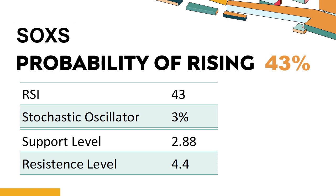The current stochastic oscillator of SOXS is 3%. When the indicator falls below the 20 level, it is usually considered oversold, indicating that a price rebound or recovery is likely for the stock. An oversold condition occurs when the stock price falls too fast and too much in a short period of time, which may indicate that the selling pressure has exhausted.